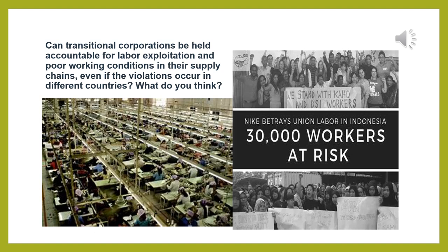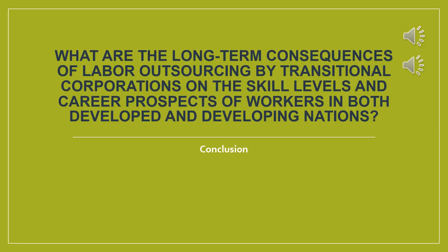We're going to analyze pictures and link them to labor availability, migration, globalization, and industrialization. We'll also examine the risks, threats, and weaknesses involved. A key question we'll answer is: Can transnational corporations and TNCs be held accountable for labor exploitation and poor working conditions in their supply chains, even if the violations occur in different countries?